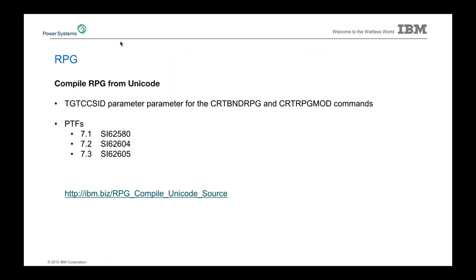Next, RPG — a rather interesting update. We added a new parameter to the Create Bound RPG or Create RPG Module command, added in 7.1 through 7.3. It allows you to specify your target CCSID, which solves a significant problem where if you had your RPG source code stored in Unicode, the compiler would not recognize things properly. This new parameter helps alleviate that issue.